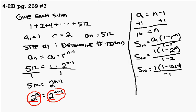1 minus 2 is negative 1. So if I subtract 1024 from 1, I get negative 1023. So here I've got 1 times negative 1023 over negative 1.